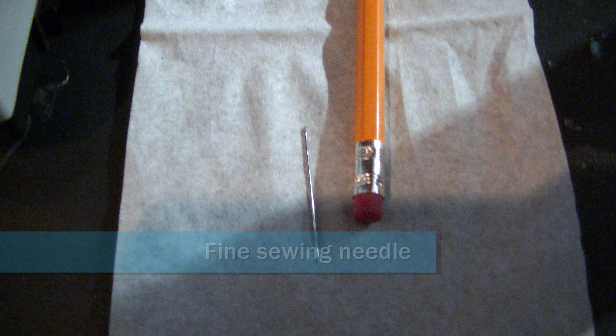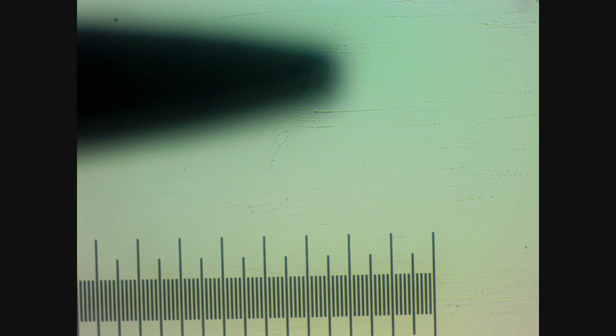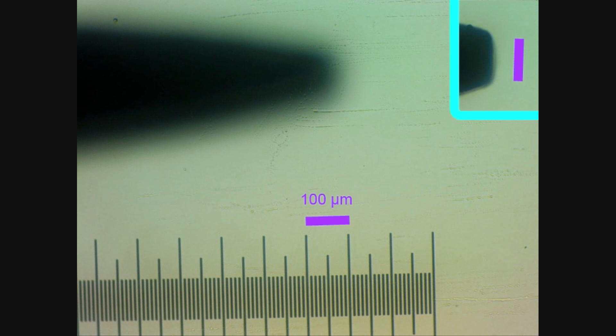Next up is a fine sewing needle. First, we're going to look at the eye of the needle. This is hard to get into focus with the calibration slide at the same time, because the needle is so high in the air relative to where the gauge is. But as you can see, it's approximately 1 mm long and a quarter millimeter wide, 250 micrometers. The pin is even harder to get into focus with the slide because it's much finer and much more elevated in the air. The tip of the pin here is approximately 100 micrometers.